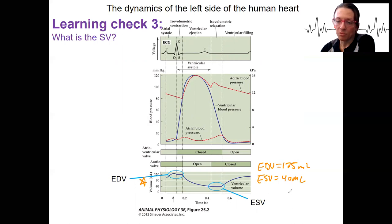125 minus 40 is 85 milliliters. That's stroke volume. That's how much the heart is ejecting during this event here. It's because of this pressure increase.